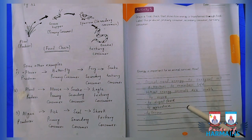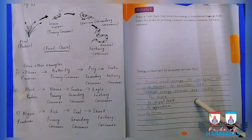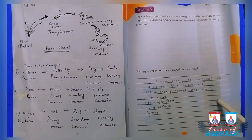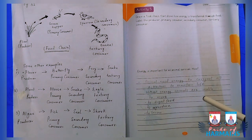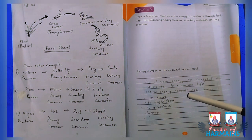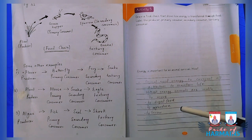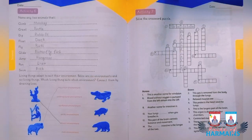The second part of activity five asks: why is energy important for animal survival? We need energy for many processes to maintain life. Without energy, we cannot move, digest food, reproduce, or grow.